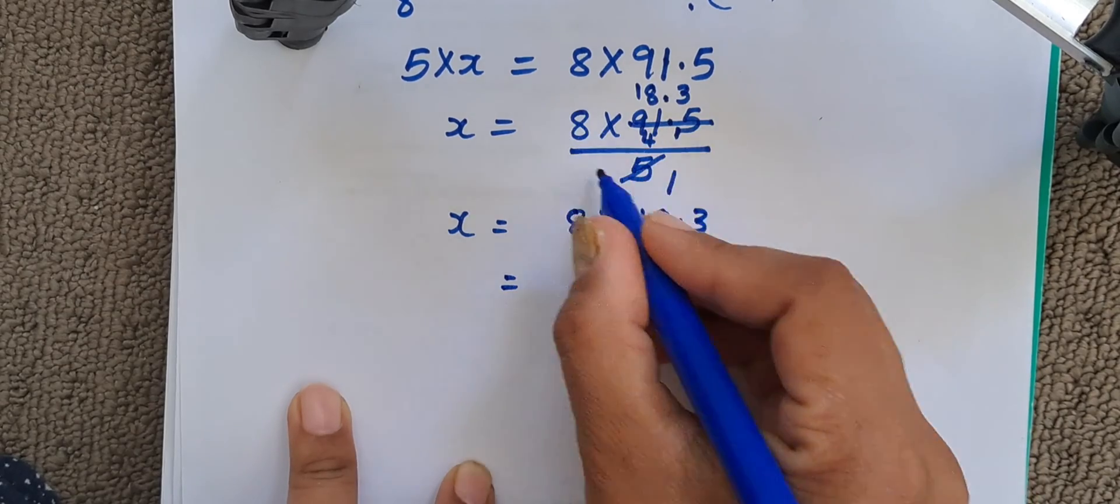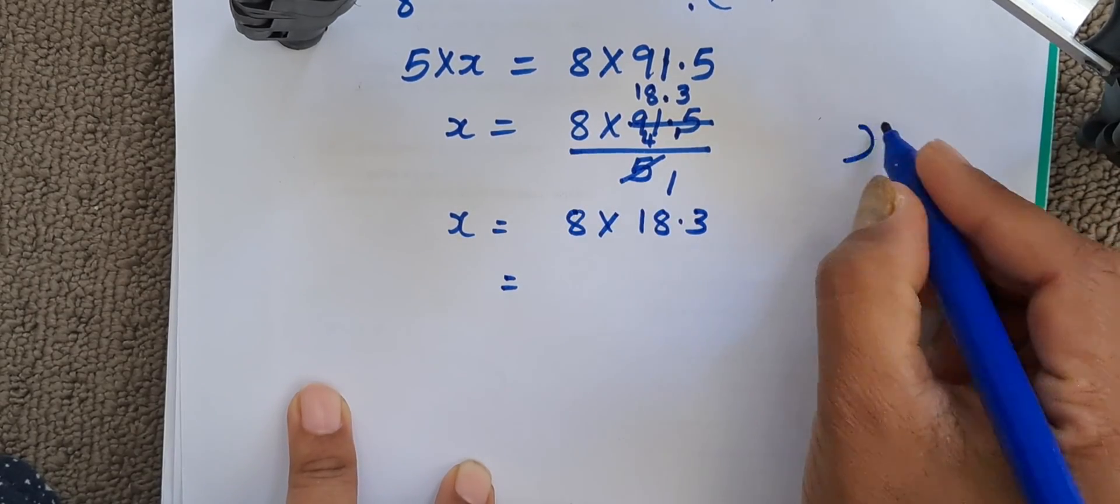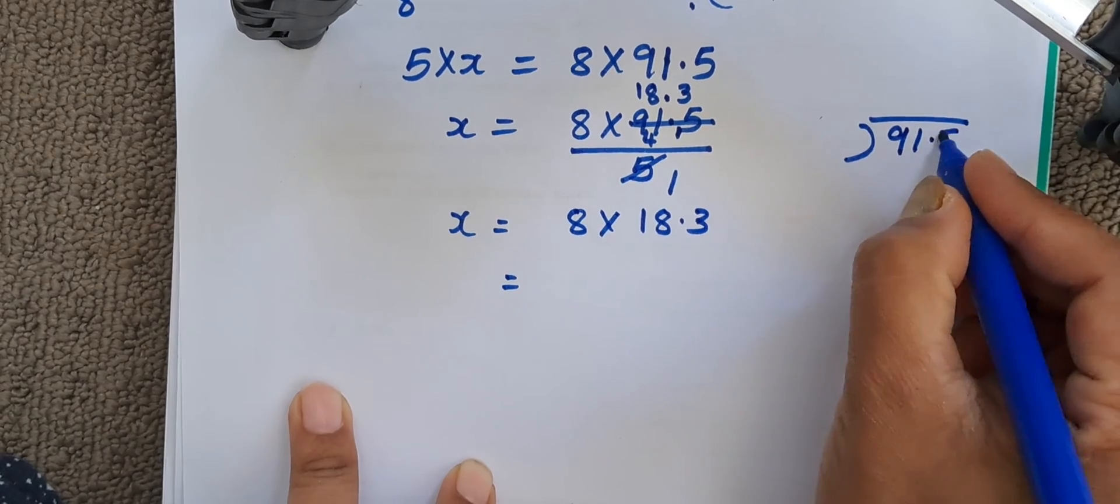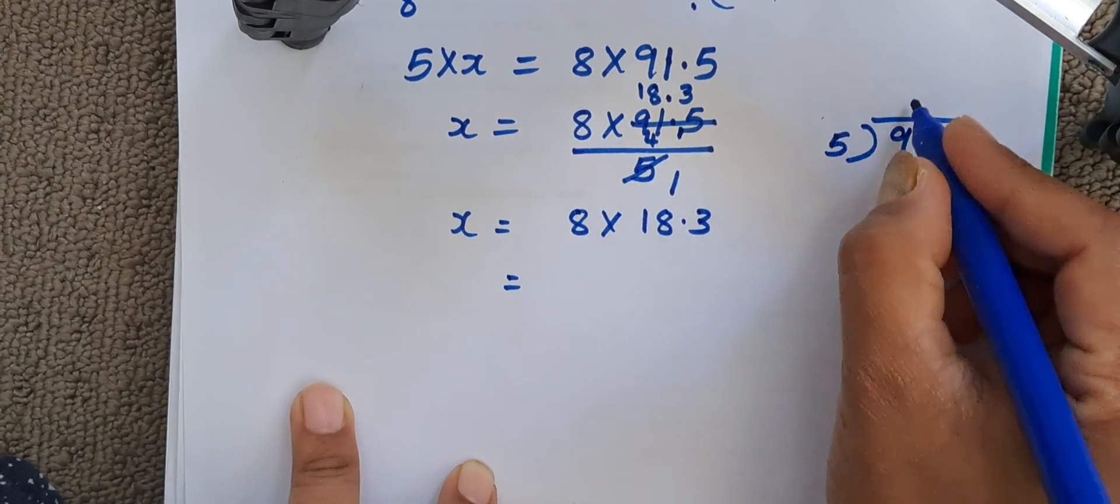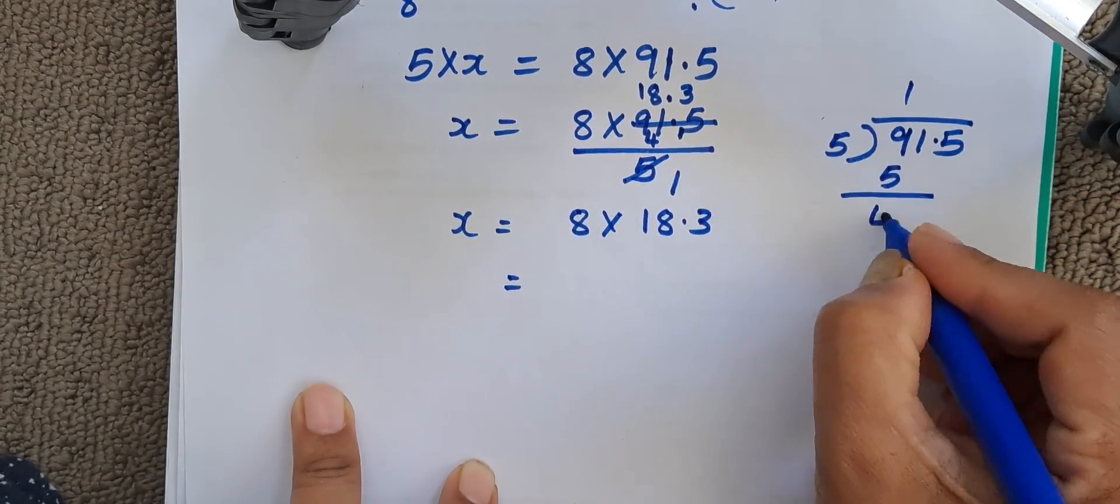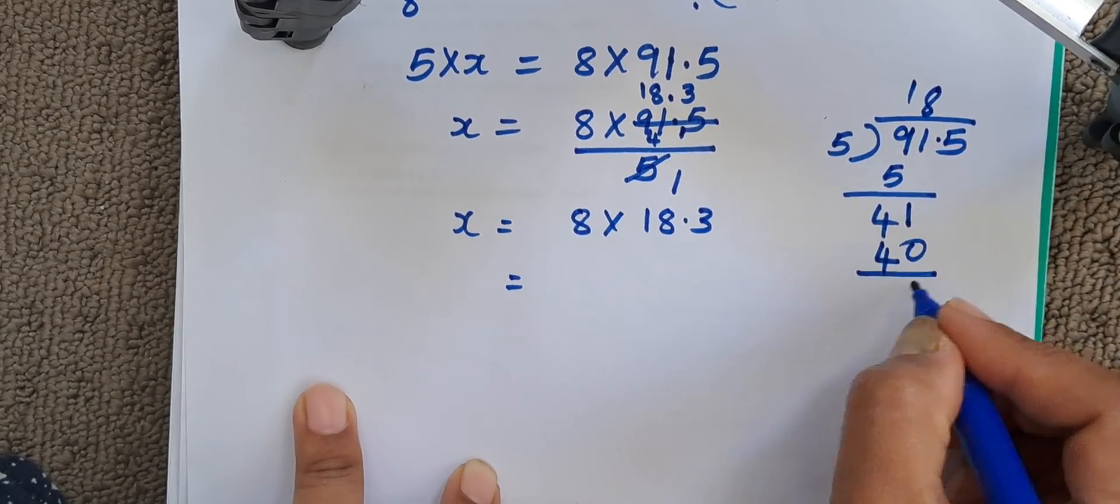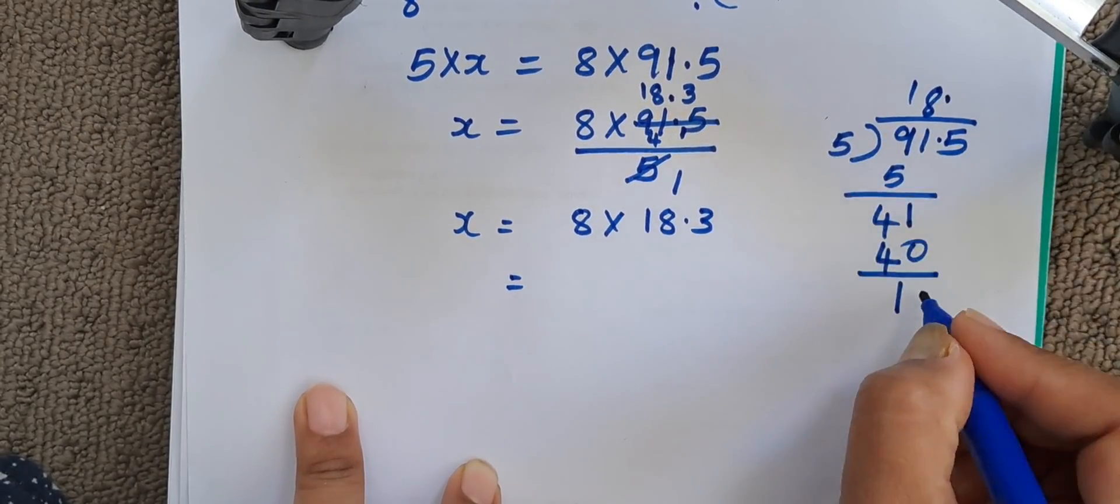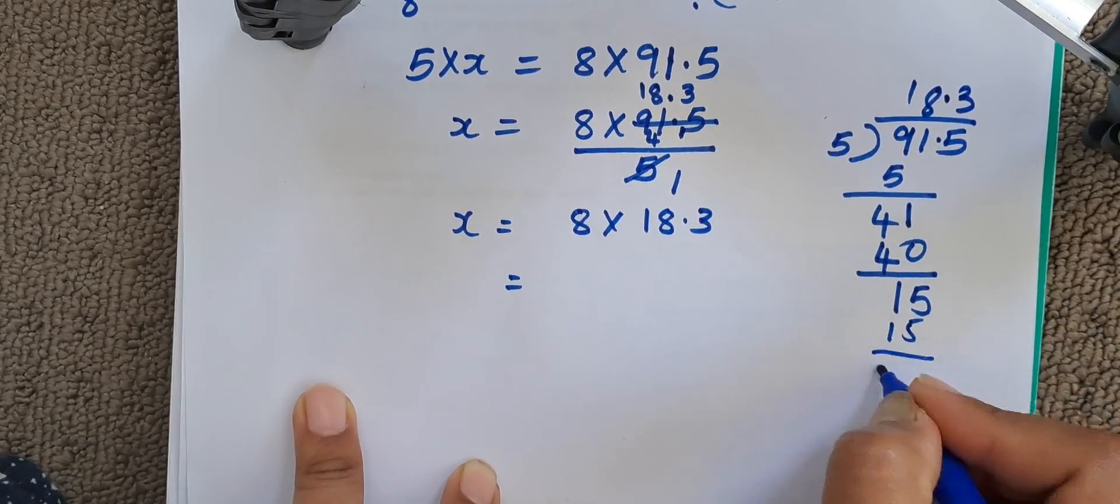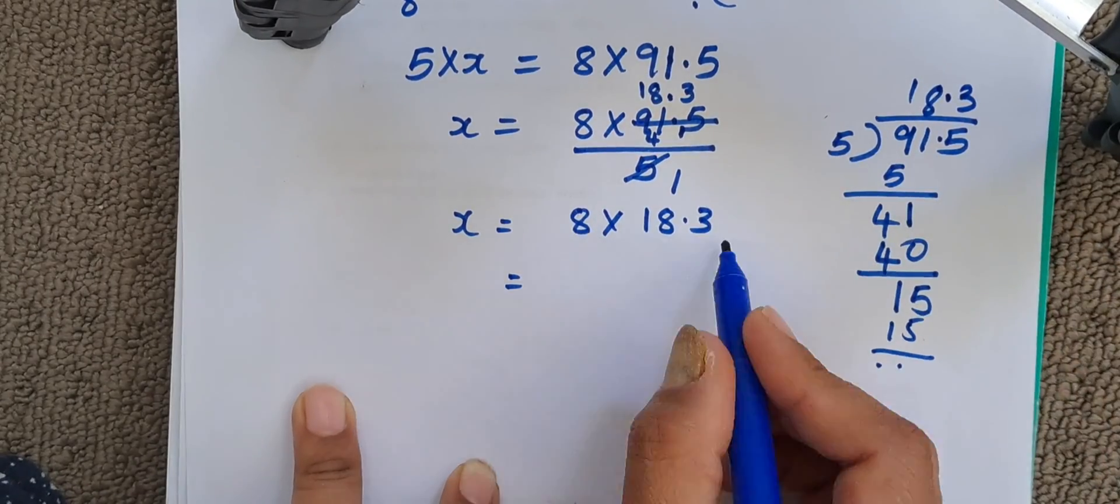If you are getting confused, you can divide it like this. 91.5 divided by 5. 5 1s are 5, 4, pull down 1. 5 8s are 40, 1. We put a point. Pull down 5. 5 3s are 15. So 18.3.